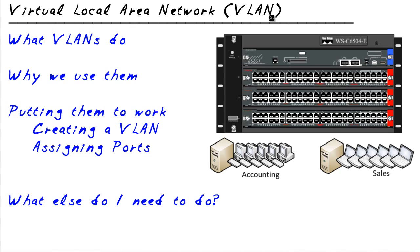A broadcast — if you took a look at my other micro nugget on broadcast — a broadcast going into a port is forwarded to every other port on the switch. But with VLANs, the broadcast that goes into VLAN 2, for example, would only be sent to other active ports that are in VLAN 2. It wouldn't go to everybody, just a subset. So we're reducing the broadcast load by cutting up our network into smaller VLANs, virtual local area networks.